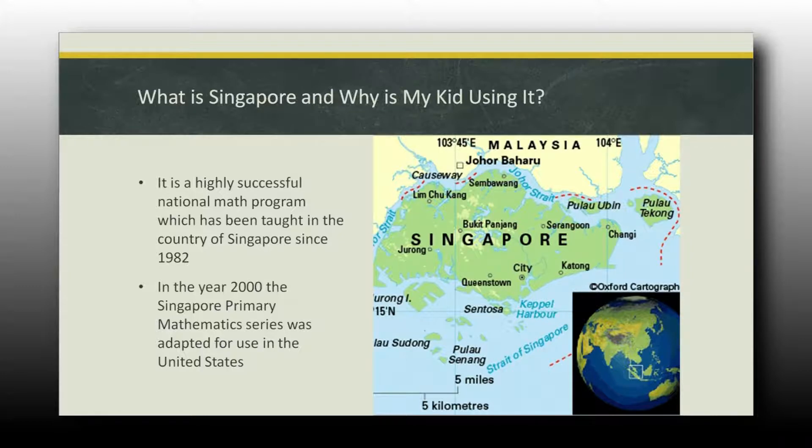So Singapore is this little country out there in Asia and really the main reason why the United States looked at adapting Singapore math is basically because of the statistics. The program was developed in Singapore in 1982. What they did is they were performing very low in mathematics for a long time and their Ministry of Education, which is kind of like our Department of Education, spent quite a bit of money shipping people out all over the world asking, what are people doing different? Which countries are being successful?